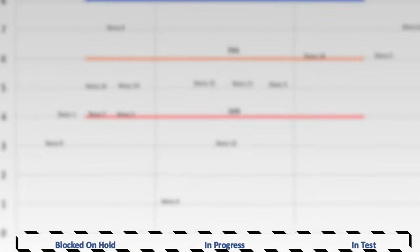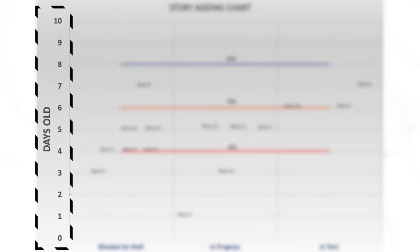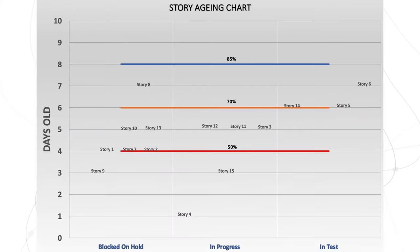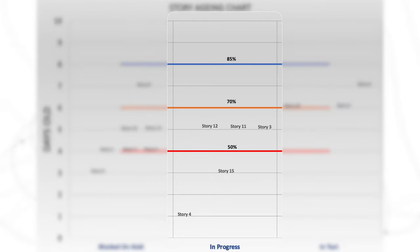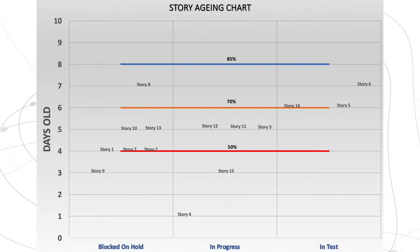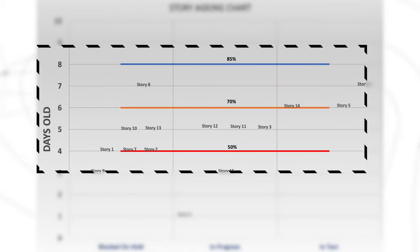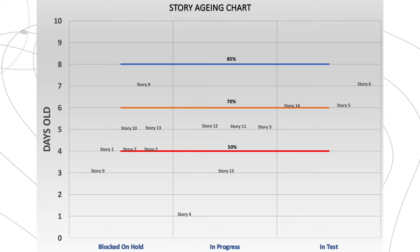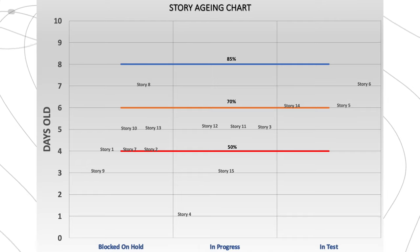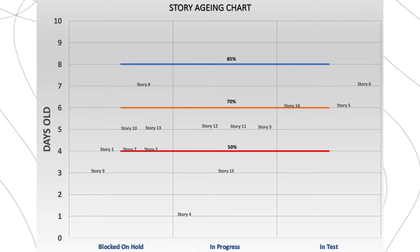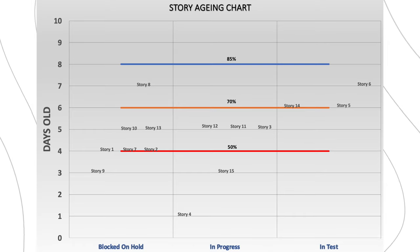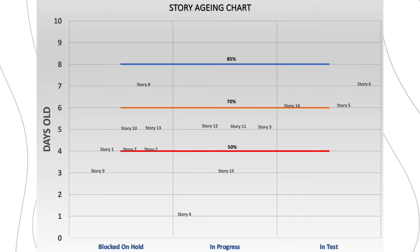There's a link in the description to a template so you can download it and have a play with your own data. Along the bottom you can see your board column names, and on the side the number of days old a story is. The story names are listed so you can read off to the left how old they are, and they're placed in their current workflow state. You're going to mark your percentiles horizontally across the board: 50%, 70%, and lastly 85%. Where do these percentile lines come from? You get this data from your cycle times for single items that you've previously calculated — check the videos in the description below for more information on how to do this.